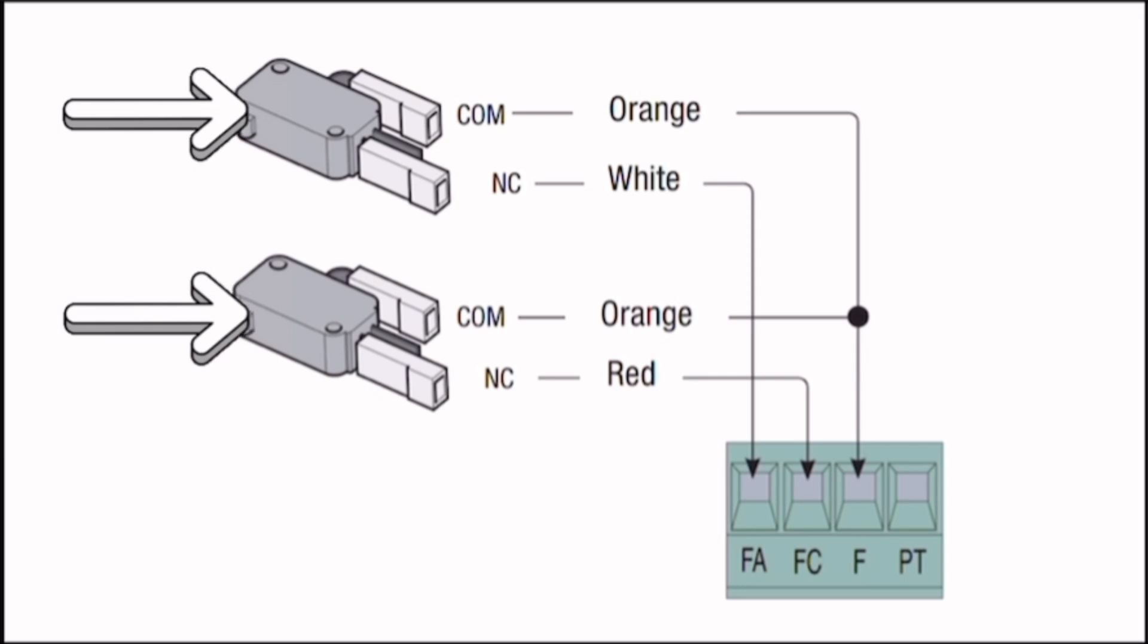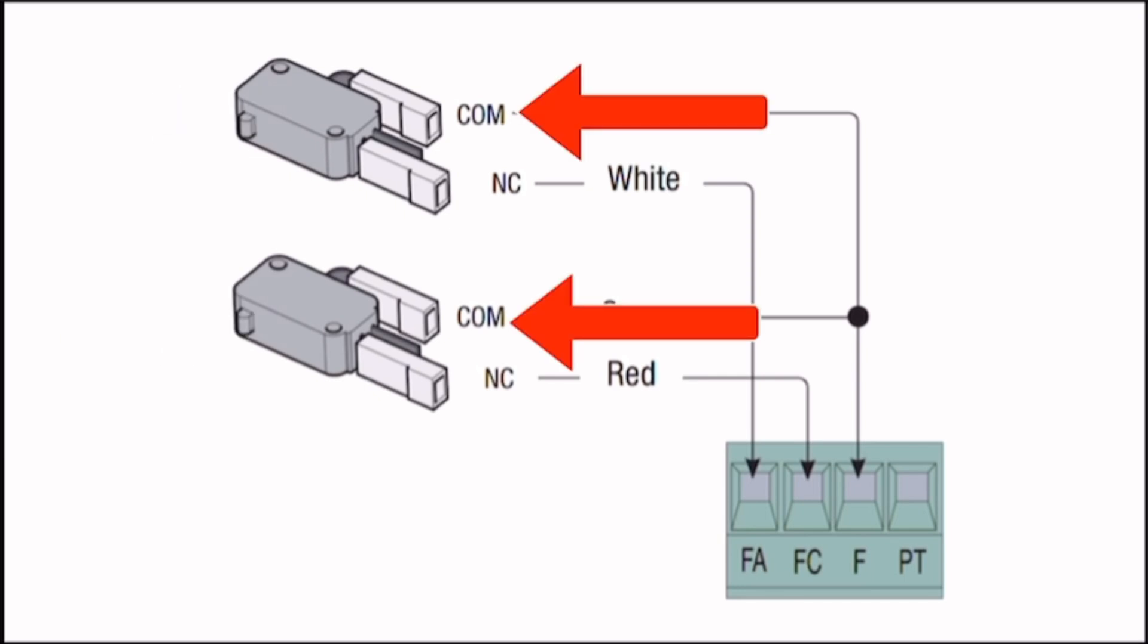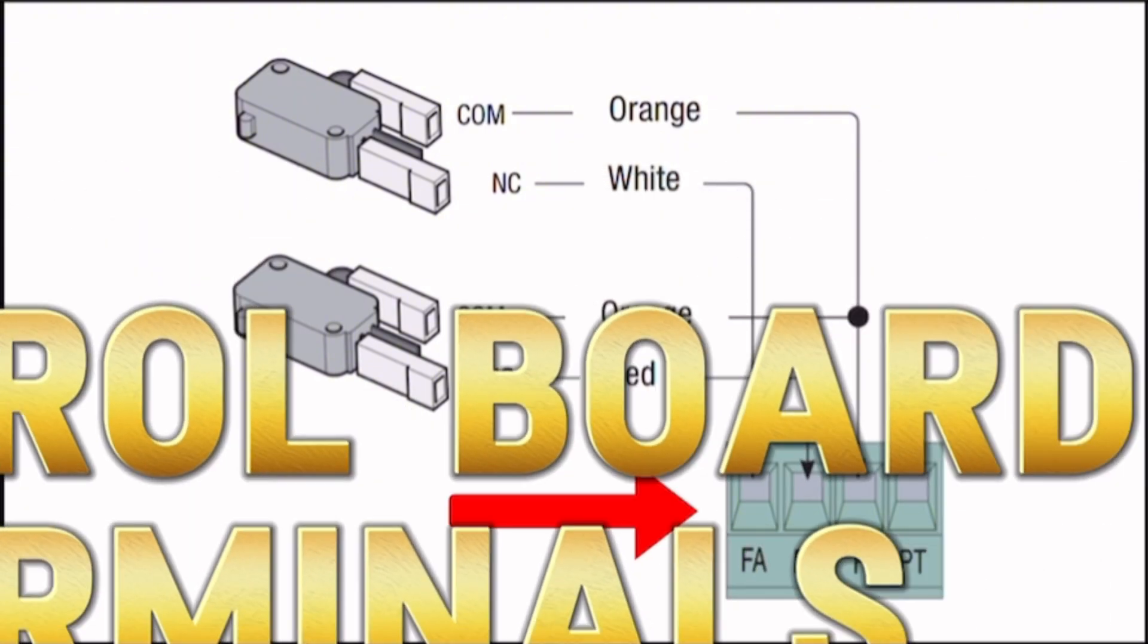Two switches are shown, each having COM (common), a terminal where the input wire connects, and NC (normally closed), a terminal that remains connected to COM when the switch is in its normal state, not activated.